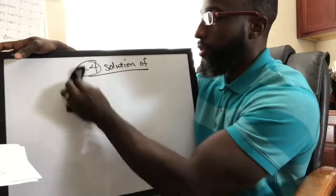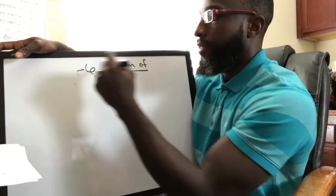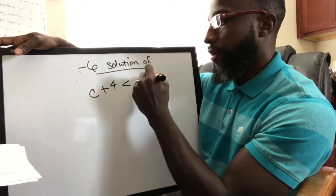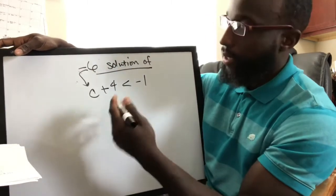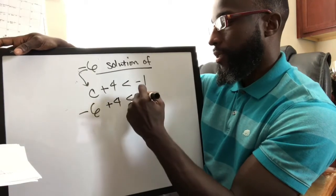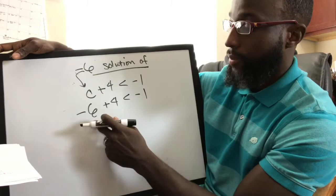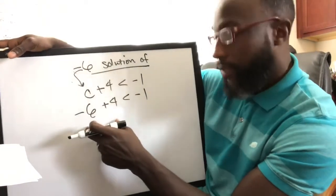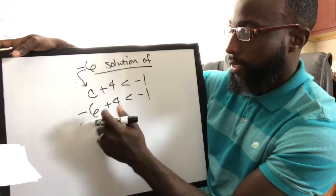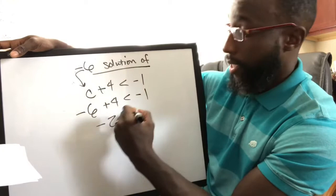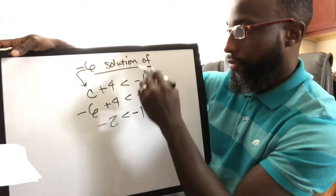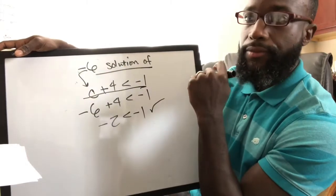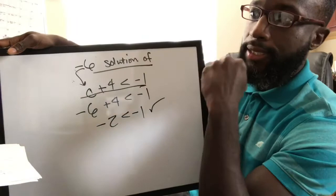Let's do another example. They want to know if negative 6 is a solution of c + 4 < −1. Substitute: −6 + 4. Different signs, so we subtract and keep the sign of the bigger number — we get negative 2. Is negative 2 less than negative 1? Absolutely. Therefore, negative 6 is a solution of this inequality.